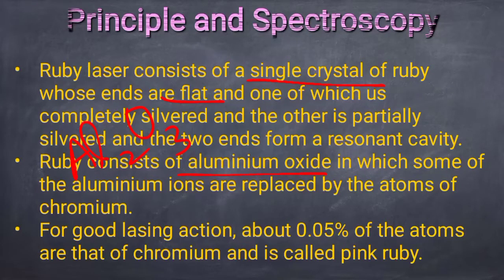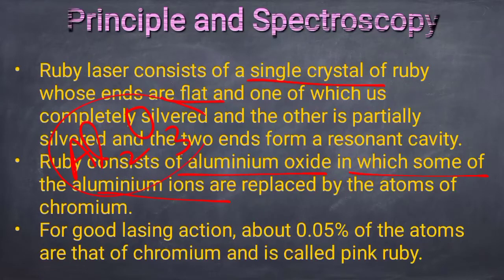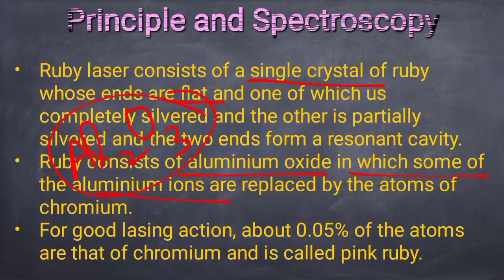The ruby crystal consists of aluminium oxide (Al2O3), in which some of the aluminium ions are replaced by atoms of chromium. This substitution is done to obtain good lasing action.